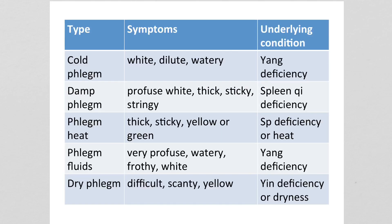There are lots of different flavours of phlegm. Cold phlegm tends to be white, dilute, and watery, with underlying yang deficiency. Damp phlegm tends to be profuse, white, thick, sticky, and stringy, and there's usually spleen or chest deficiency underlying.